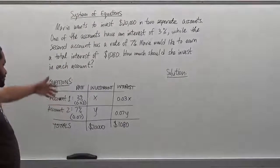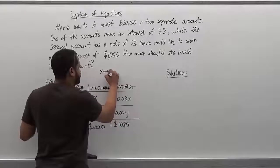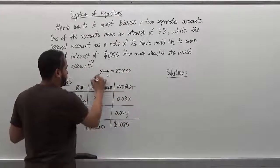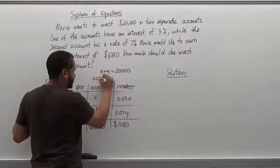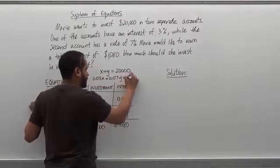So here we have the system of equations. We're looking at it directly. So we have x plus y equals $20,000. And then we have 0.03x plus 0.07y equals $1,080.